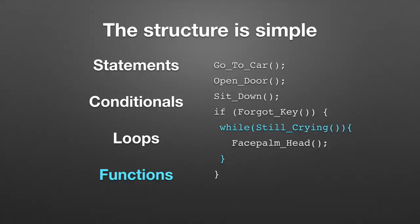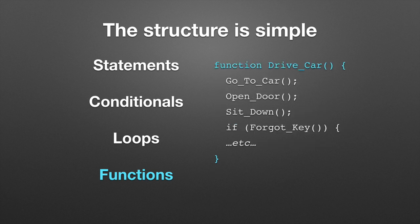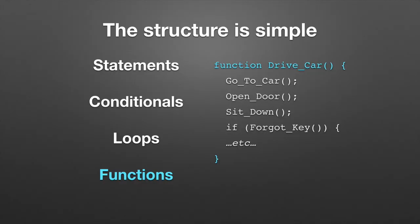And the last kind of building block is actually the most powerful, but it looks really simple. It's about taking everything you did before and just giving it a name, putting it in a block called 'drive car.' And now anywhere you want, you can just write 'drive car' and it will do all of those different things, like crying if you forget the key and starting the car. Functions are very powerful.